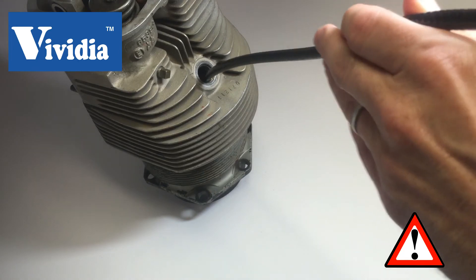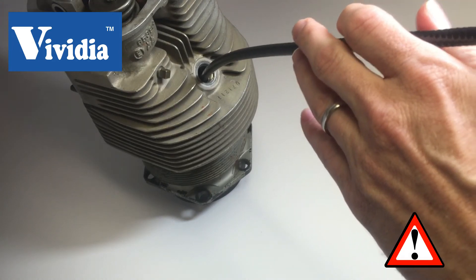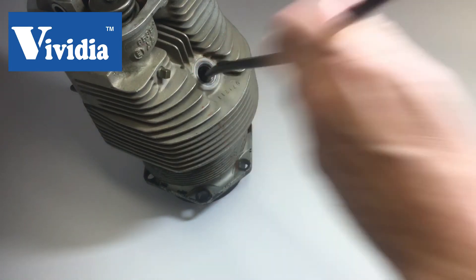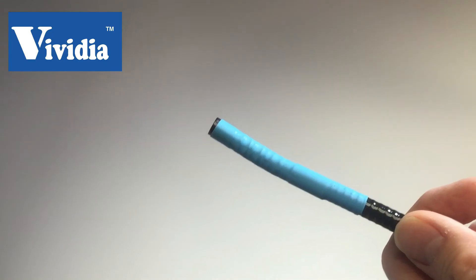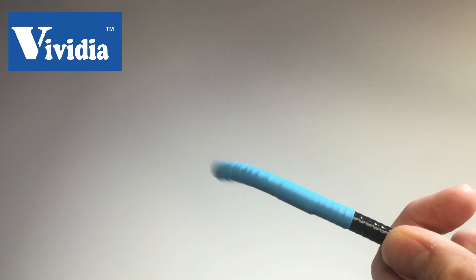Now one note of caution while performing an inspection in the lock position is to be careful not to too quickly remove the probe and risk breaking or damaging the camera. One other thing to be cautious about is never